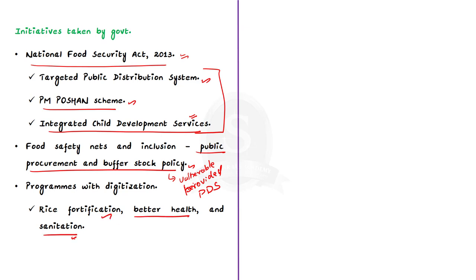India is currently in a unique position. With Western powers ignoring the issue of hunger and malnutrition, India can share its expertise with the Global South and become a torchbearer for addressing global hunger, raising India's stature among world nations and supporting its long-term geopolitical goals. Along with the government, we too must take steps to address the issue of hunger.